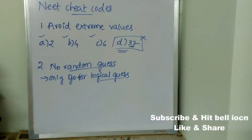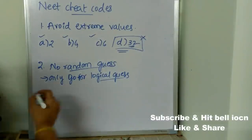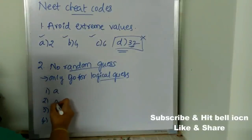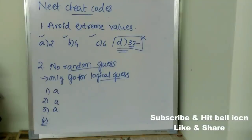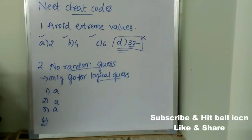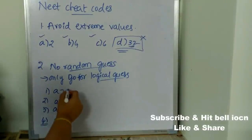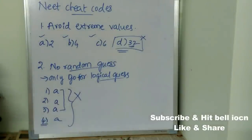Random guess means: for example, if after solving the first three questions you got option A as the answer each time, then assuming the fourth question's answer is also A — that is a random guess. This is absolutely the wrong method. Coin-flip or pattern-based guessing are all random guesses — don't follow them.